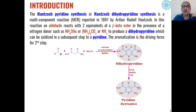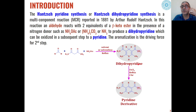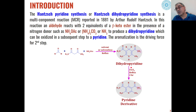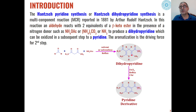Under reflux conditions, all these components — aldehydes or ketones, beta-ketoesters, and a nitrogen source — condense with each other to give heterocyclic structures which are dihydropyridines. These dihydropyridines can be oxidized to pyridine derivatives in the presence of oxidizing agents. Most commonly, when dihydropyridines are refluxed in the presence of pyridine, aromatization of the dihydropyridine ring takes place, and this aromatization is the driving force for the conversion of dihydropyridines into pyridine systems.